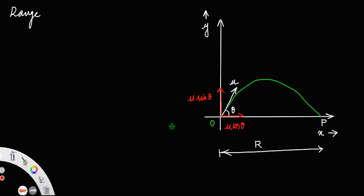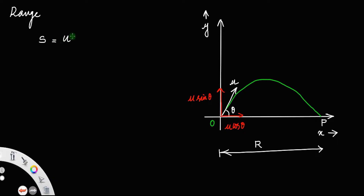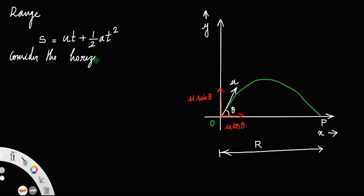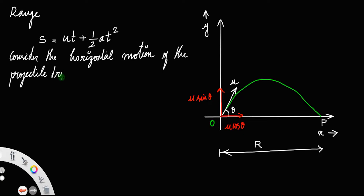Let us take the second kinematic equation: S = ut + ½at². We are focusing only on the horizontal motion of the projectile, considering the horizontal motion from point O to point P.